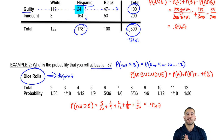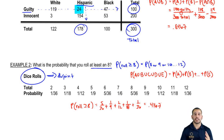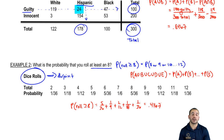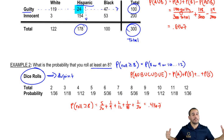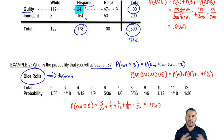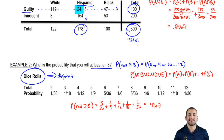That's about it for the addition rule and talking about jointed and disjointed events. Now we're going to move on to our next rule — the multiplication rule — and then eventually some larger problems to tie everything together. Until next time, take care.